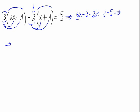Now, let's operate the left part of the equal sign. 6x minus 2x would be 4x, and minus 3 and minus 2 is minus 5, equals 5.